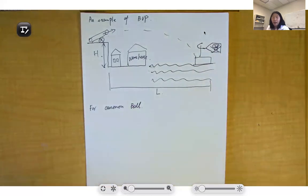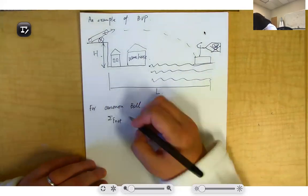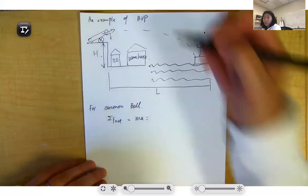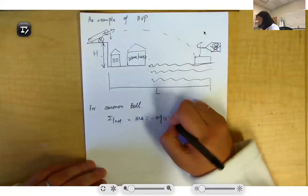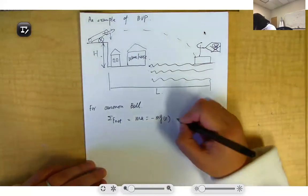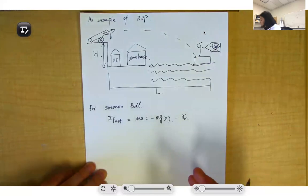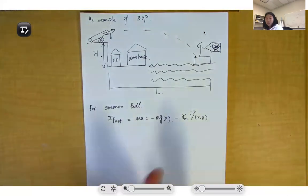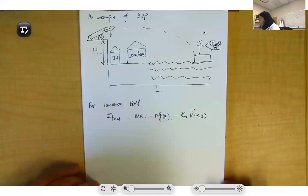For the cannonball after it is shot, it has two forces: gravity and air resistance. The net force equals MA, constructed by gravity in the z-direction and air resistance based on speed. So we have mg in the z-direction minus gamma times velocity, where x is the horizontal direction and z is the perpendicular (vertical) direction.